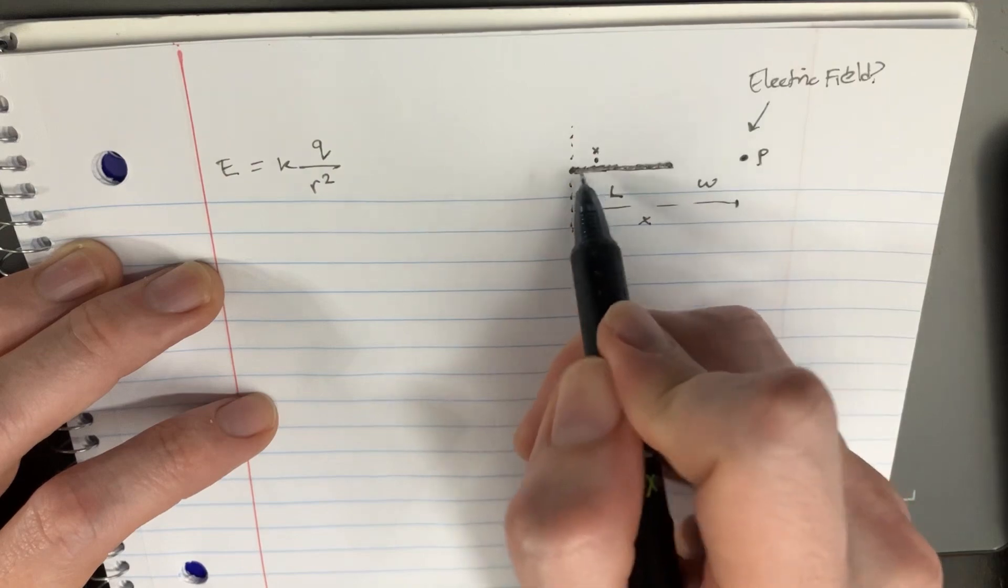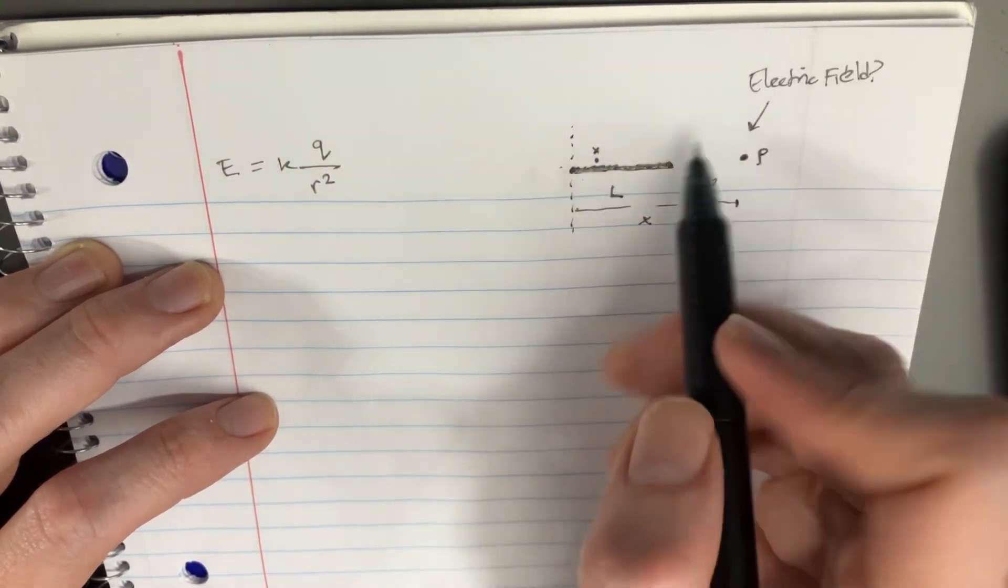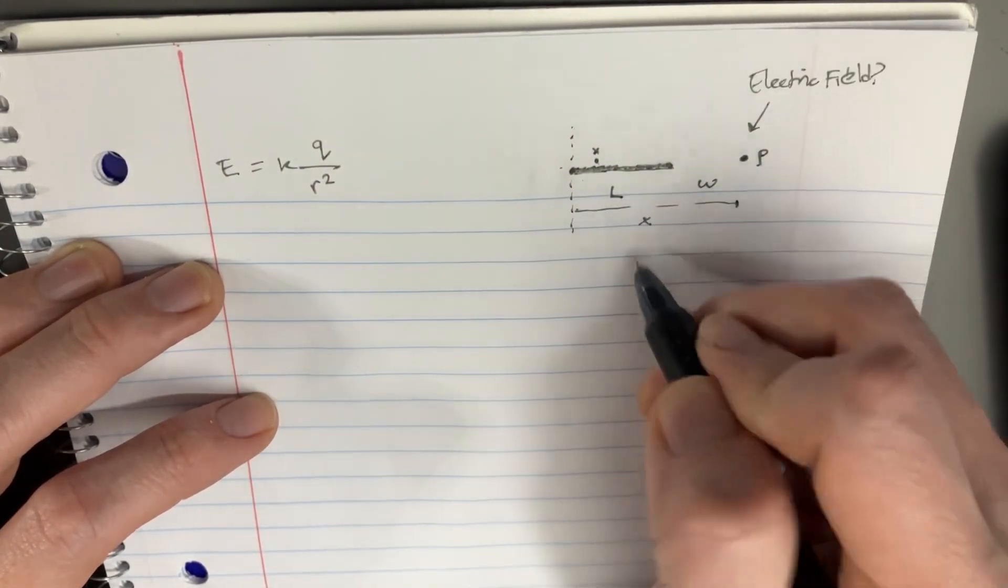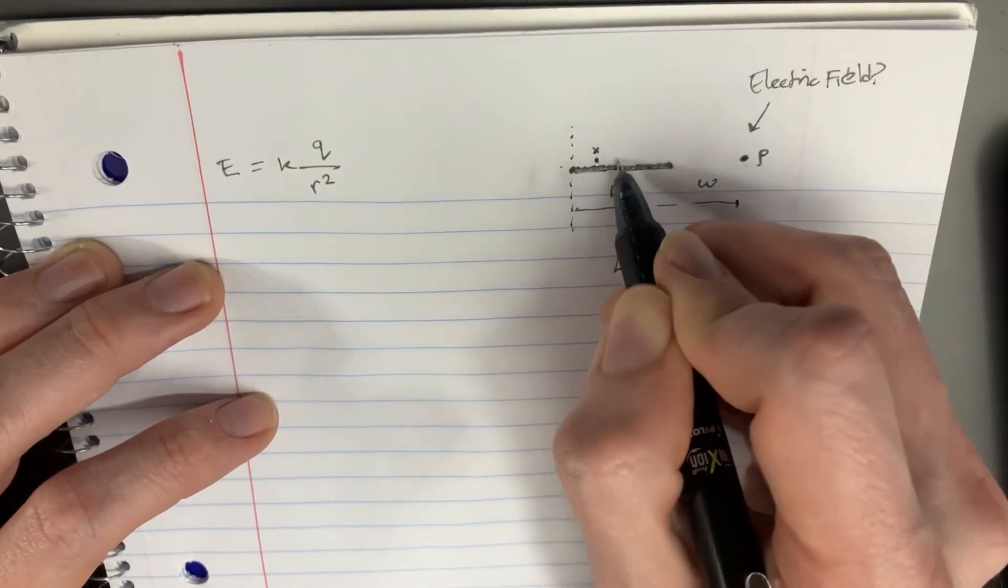And, well, that's not how far away it is. It's actually more like that far. So technically, it would be L plus W minus X.